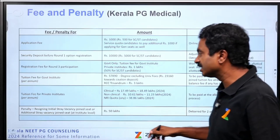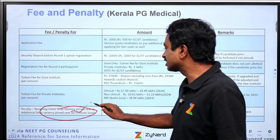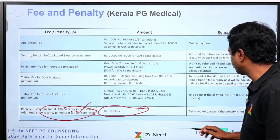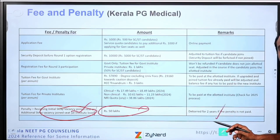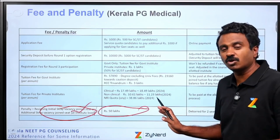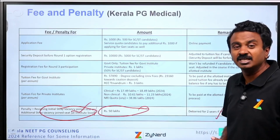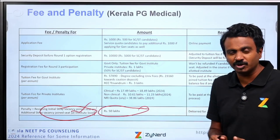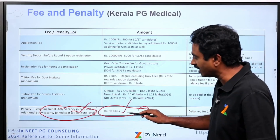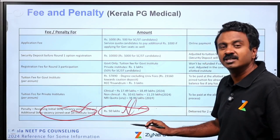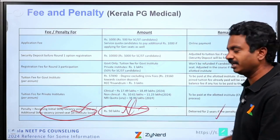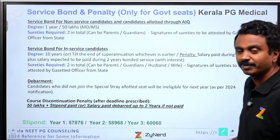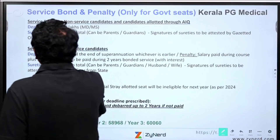Penalty: there is a timeline around stray vacancy or joining the seat. If you resign after that, the penalty starts, which is 50 lakhs. If you do not pay the penalty, you will be debarred for two years. Debarment for two years does not mean you can opt for debarment instead of paying 50 lakhs — the penalty must be paid and they will recover it. If you still continue not paying, then you will be debarred for two years. Always take your decision carefully.